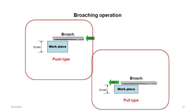The broaching operation includes push type and pull type. In the push type, the tool moves from right to left to remove the material. In the pull type, material is removed by pulling the broach through the workpiece. Push type and pull type are two important types of broaching machines.